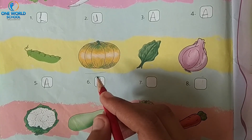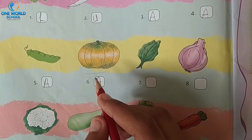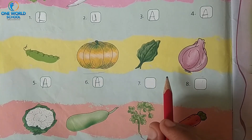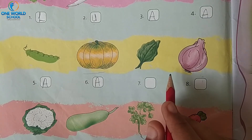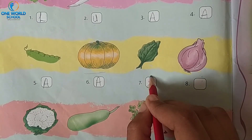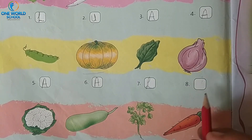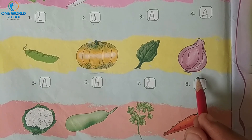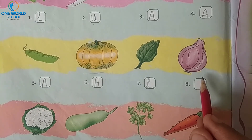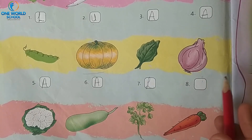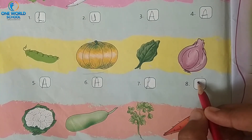Aap sab ko samajh mein aa raha hai na? Now number 7 — which is this vegetable? This is spinach. Spinach is a leafy vegetable, so we will write here L. L means leafy vegetables. Now number 8 — this is onion. Onion kahan pe grow karte hain? It is a type of root vegetable which grows under the ground. Matlab hum idhar kya likhenge? U. Very good.